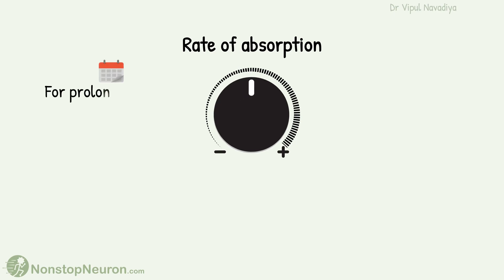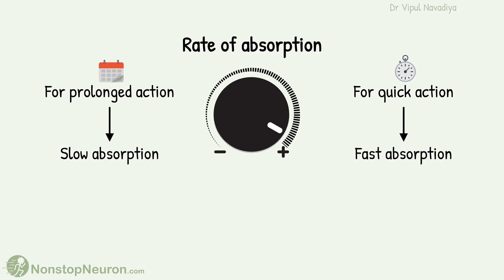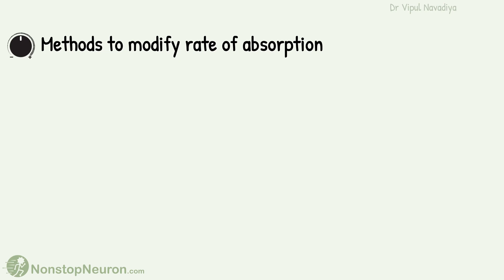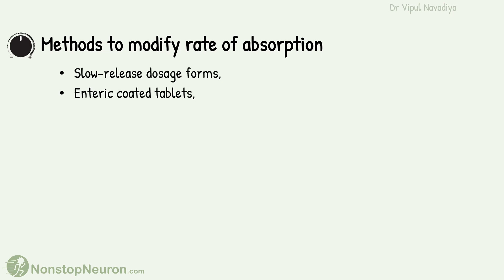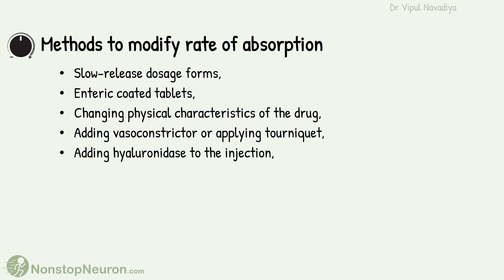For example, if we want prolonged action, we want to slow down the absorption. And if we want quick action, we want the absorption to be very fast. Methods by which we can do so are slow-release dosage forms, enteric-coated tablets, changing physical characteristics of the drug, adding vasoconstrictor or applying a tourniquet, adding hyaluronidase to the injection, and rubbing and massage.